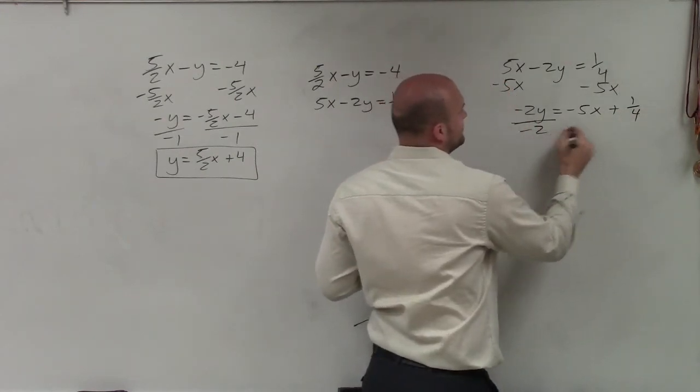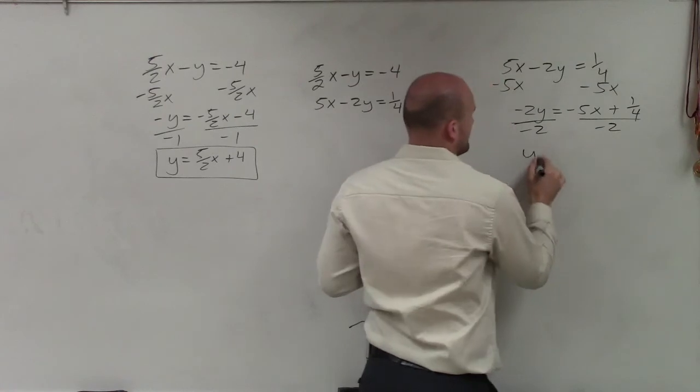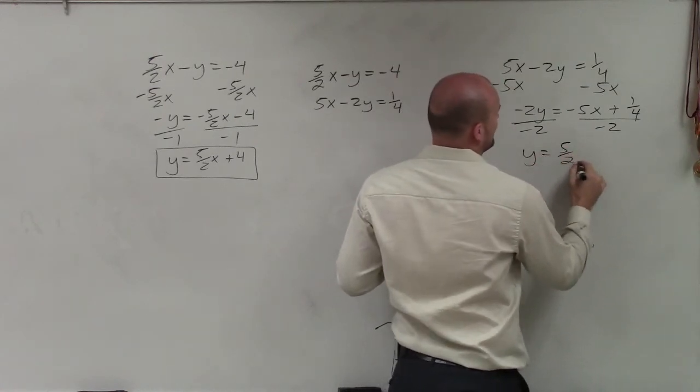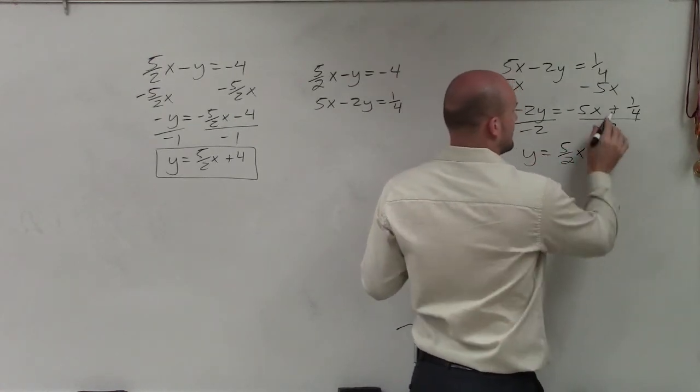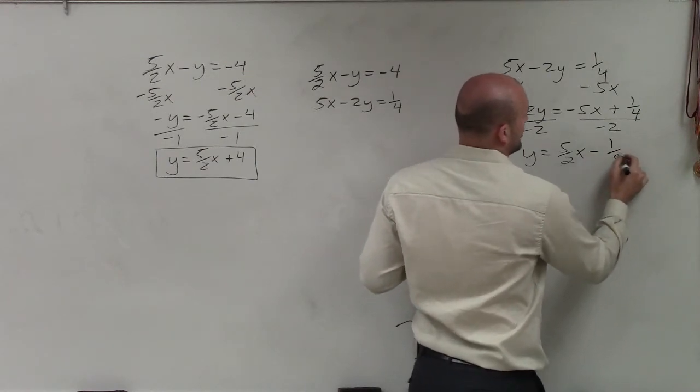Now, again, divide by negative 2. y equals a positive 5 halves x, and that's now going to be minus 1 eighth.